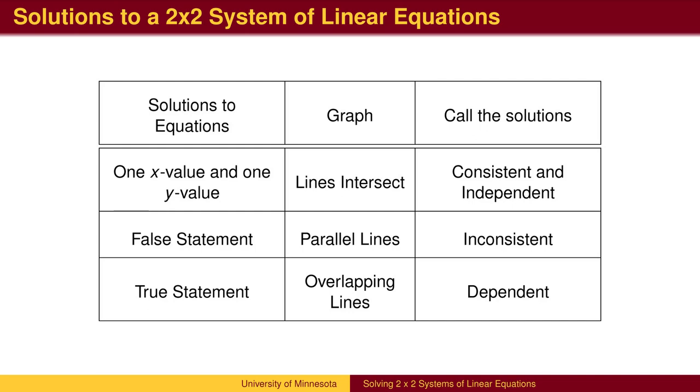If in solving the system of equations you get a statement that is false, the two lines were parallel, and there is no solution. The system is called inconsistent. If you get a statement that is true, the two lines were overlapping, and the system is called dependent.